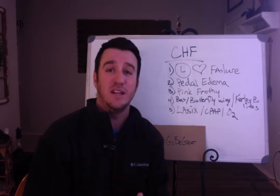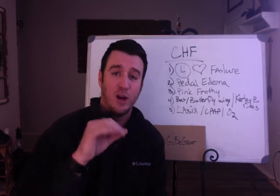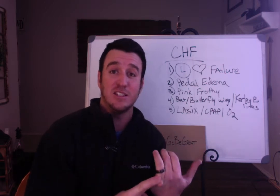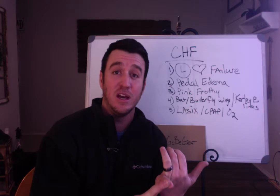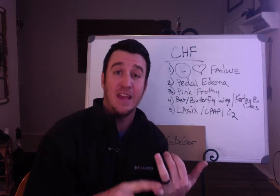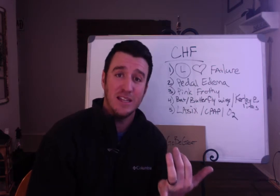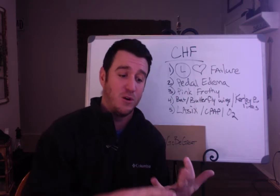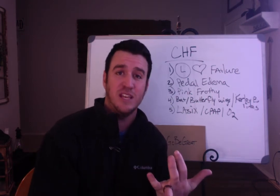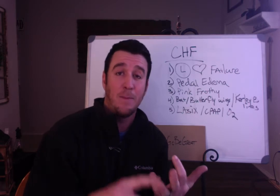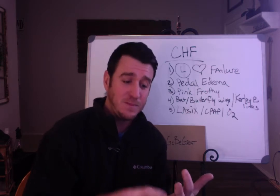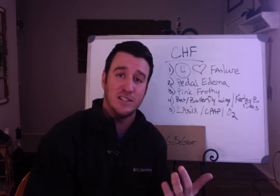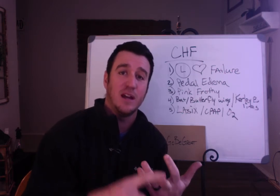How do we treat CHF? Simple — three points and only three points. One is Lasix: you have to get the excessive fluid off the patient. In the meantime, while we're giving Lasix and diuresing, we're going to focus on positive pressure therapy — so CPAP or some sort of positive pressure therapy. And we're going to focus on oxygenating our patient. So: Lasix, CPAP, and oxygen.